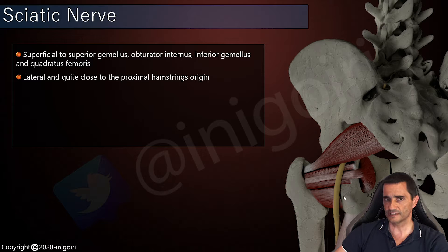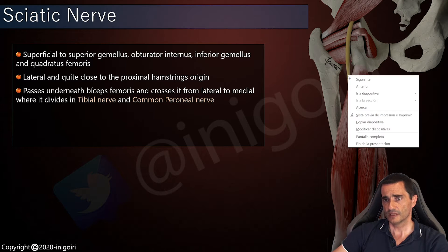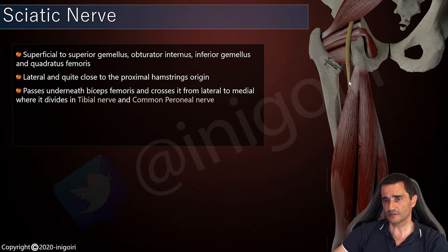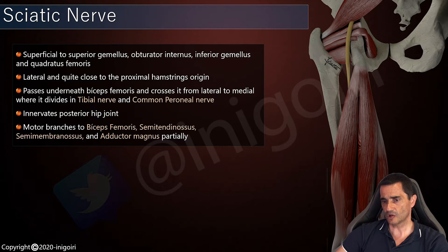These relationships are very important. Once it continues distally, it has a very close relationship with the biceps femoris muscle. It is always deep to the biceps femoris muscle, and it starts lateral to the biceps femoris and will finish medial to it. Then, very close to the knee, it divides into its terminal branches: the tibial nerve and the common peroneal nerve.